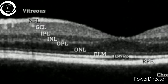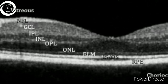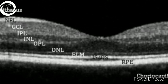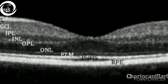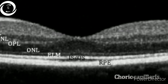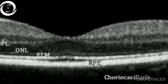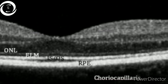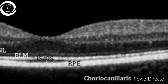Then came the spectral domain OCT, based on Fourier transformation of spectrometer analysis. Resolution was better — 5 to 8 microns — and a stationary reference mirror was used in Fourier technology. More than 20,000 A-scans per second were taken, usually in the range of 27,000 to 70,000 A-scans per second.